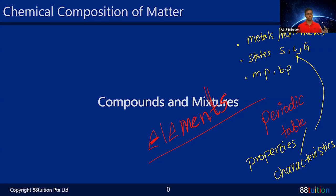The whole topic is called chemical composition of matter and it comprises elements, compounds, and mixtures. We start with the basic building block called elements, and from elements we can build compounds and mixtures. Think of it like Lego — you have your little blocks and you can build them together to make a compound, or just put them all in a box and mix them up to make a mixture.